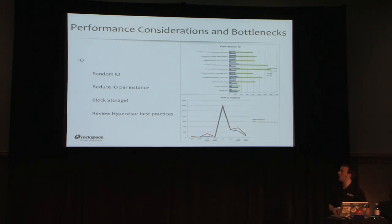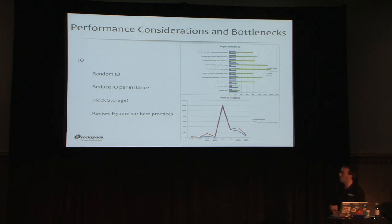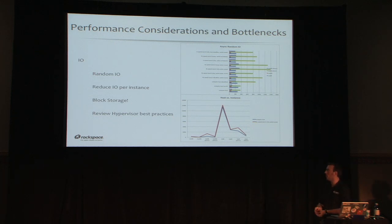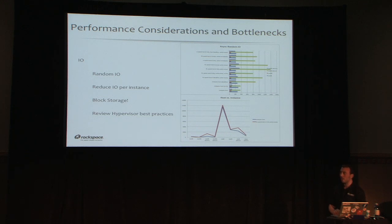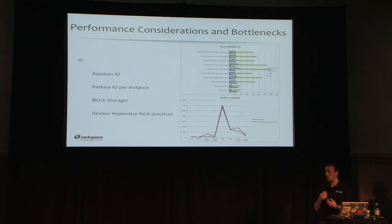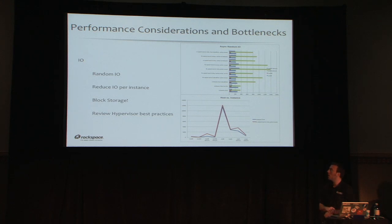For performance considerations and bottlenecks, IO is most likely going to be your problem. Random IO becomes a big deal on compute nodes depending on how many instances you're running. Block storage helps a lot — move major IO operations like databases off local disks and into Cinder, though that creates more networking demands. Review hypervisor best practices — we chose VirtIO for now, but the vhost-net module looks promising for performance. Make sure you're building images correctly for your selected hypervisor.